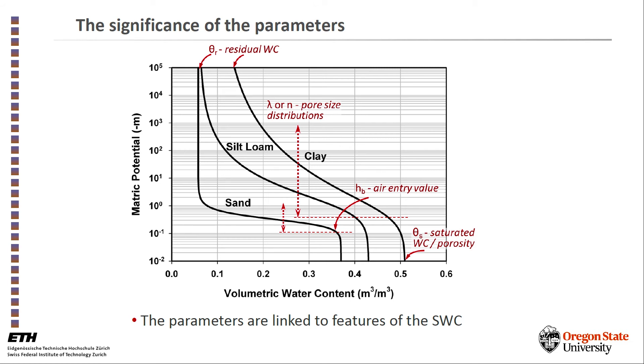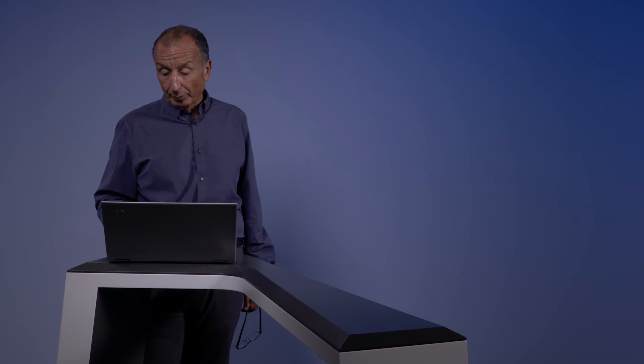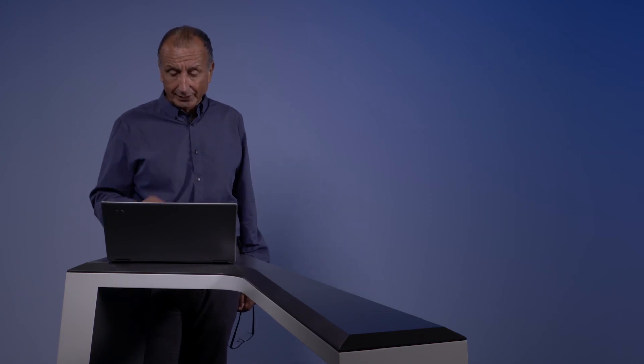These are classical soil water characteristic curves for clay, silt loam and sand, in which you see that at the intercept here, where the matric potential is very low, the soil is saturated. So this point here we associate with the saturated water content or the soil porosity, the total pore spaces in the soil.